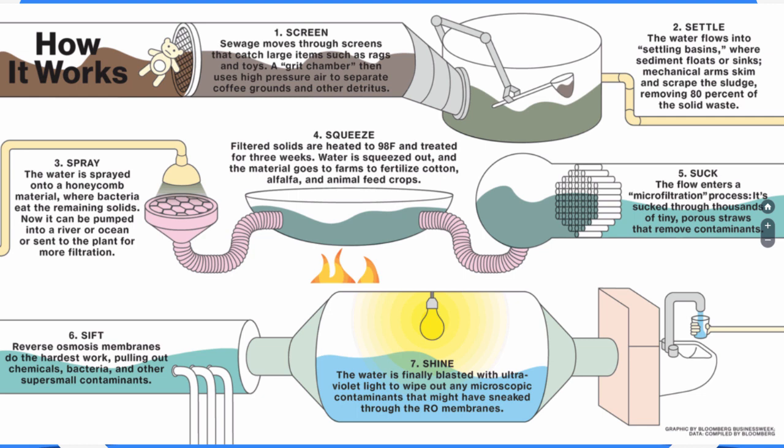Then they sift the water using reverse osmosis membranes, which pull out any chemicals, bacteria, or super small contaminants. After that comes the shine stage, where all sediments, solids, and other material have been removed. Just to be extra safe, the water is put through ultraviolet light, which wipes out any leftover microscopic contaminants or bacteria that weren't removed by reverse osmosis. After that, it is definitely clean enough to drink.